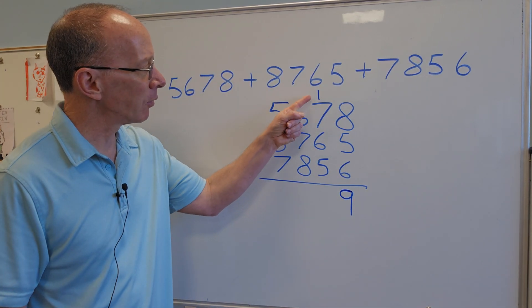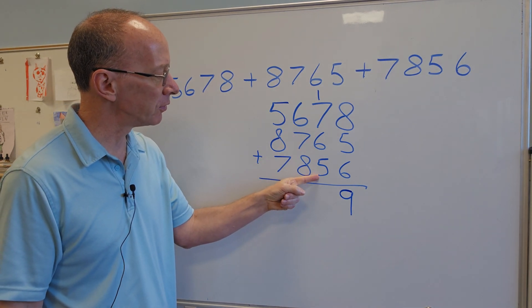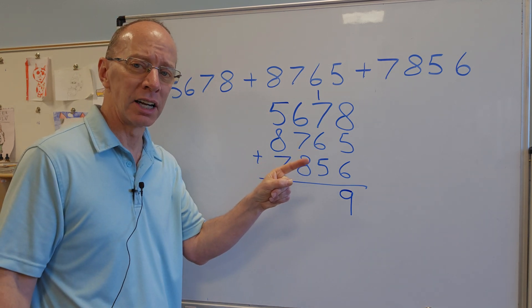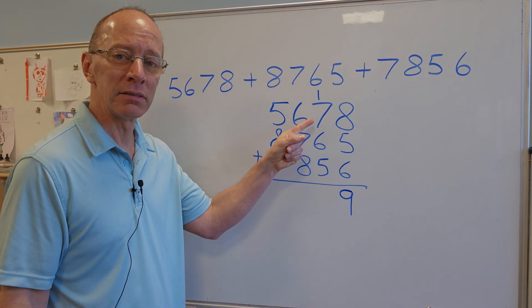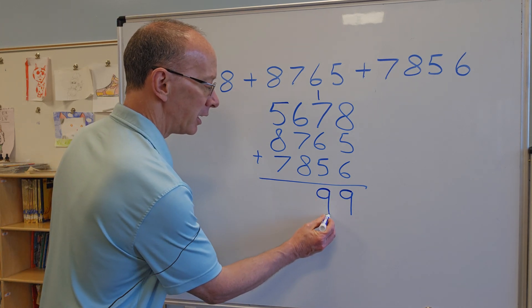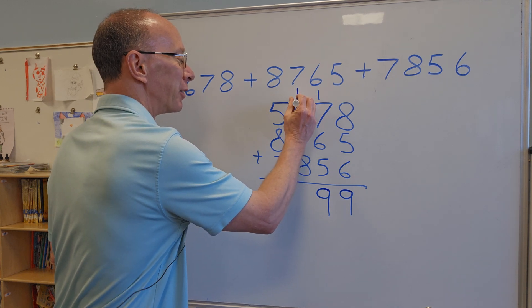So now I can take that 1 right here. Don't forget to add that 1. I'm going to take the 1 and add it to the 5, which would be a 6. And the 6 and the 6, double 6s, would be 12. And then plus the 7 would be 19 again. So I put the 9 right here and then I carry the 1.